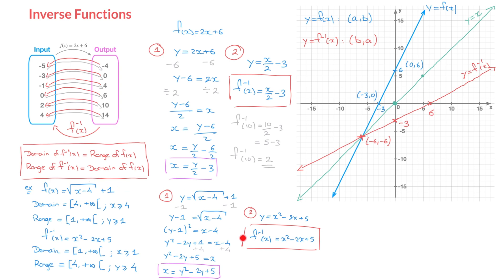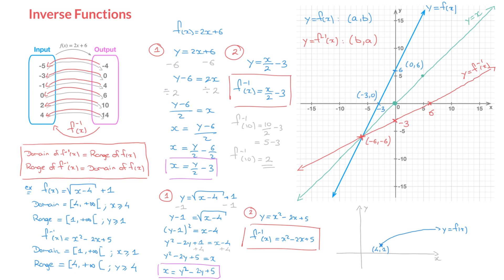Let's quickly sketch both functions on the same xy grid. The curve of f(x) = √(x − 4) + 1 has a starting point with coordinates (4, 1) and increases slowly. Looking at this curve, the fact that its first x-coordinate is 4 and it carries on infinitely to the right confirms the domain x ≥ 4. The fact that its lowest point has y-coordinate 1 and is an increasing function confirms the range y ≥ 1. For the inverse function, its curve is the mirror image of this blue one across the line y = x. The starting point of the inverse function has coordinates (1, 4).